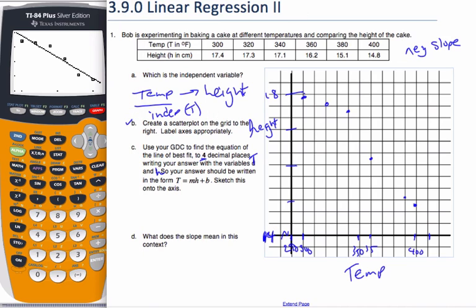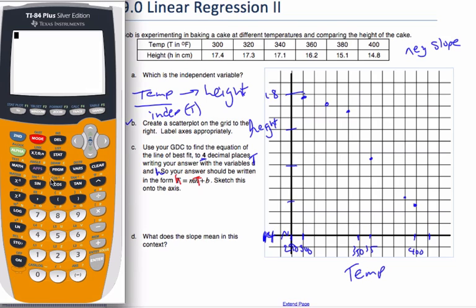Now, Ms. Flynn noticed another mistake just a moment ago. This should be H is equal to T. Because T is independent. So now, so if we were to write our equation, we can go back to either, maybe we can go to y equals and look at it there. We have four decimal places.